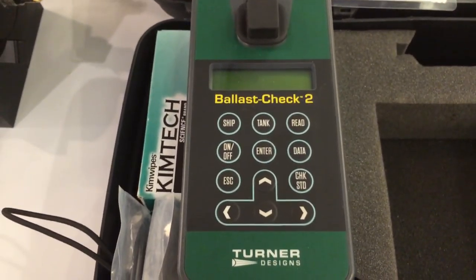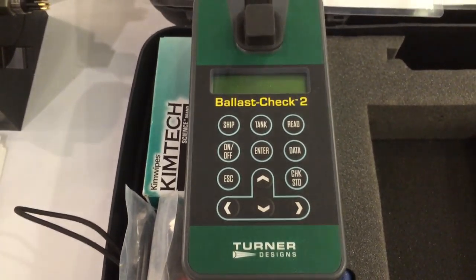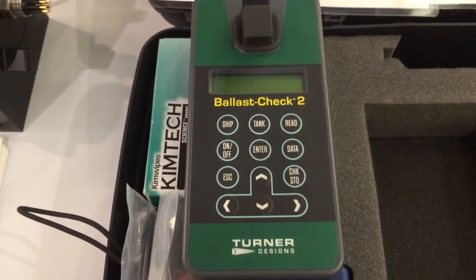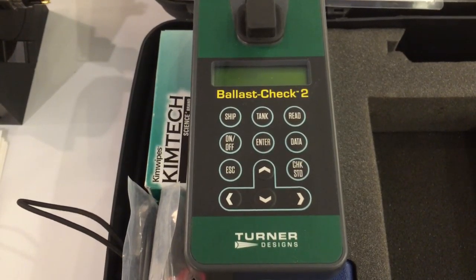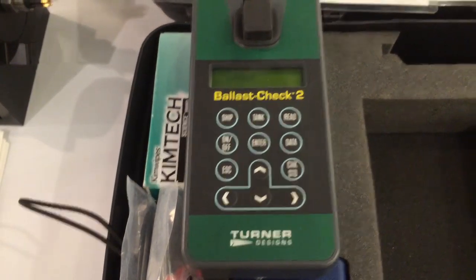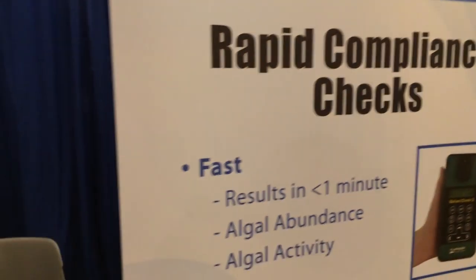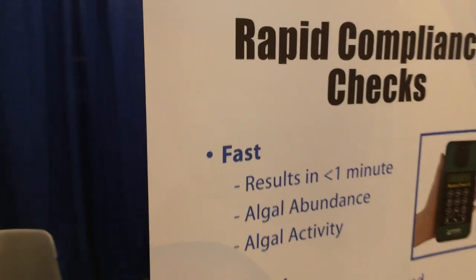I'm Loren Sionan from Turner Designs and we have a fluorometer here that can give you cell per milliliter abundance of algae between the 10-50 micron size class as a rapid compliance check for ballast water, to make sure that ballast water is within compliance levels.